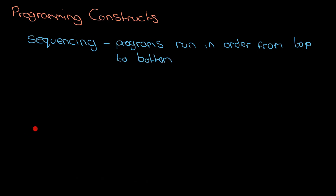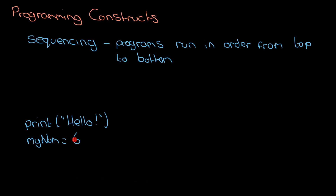I'm going to give you an example program for all these programming constructs as we go along. With sequencing, let's look at two lines of code. The first line of the computer program that gets run is the top one — 'print hello' — so you'll see 'hello' on screen. The second line that gets run is below it: 'my_num equals six', which sets a value into a variable.